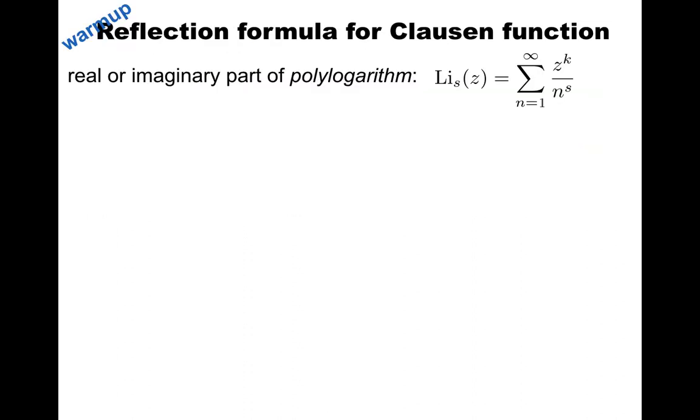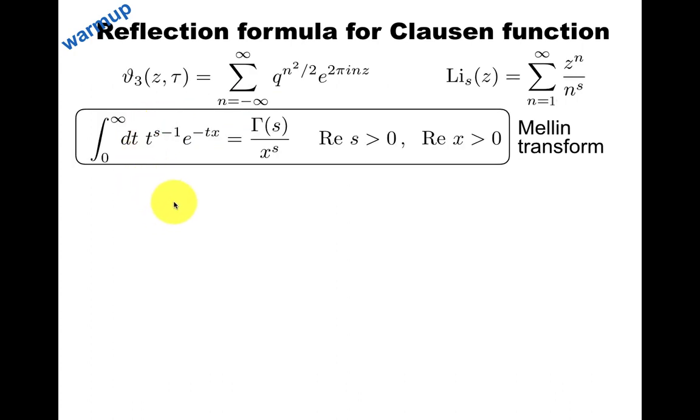So here we'd like to prove this reflection formula. As a warm-up, let's just do the reflection formula for the Clausen function, which is the real or imaginary part of the polylogarithm, which in itself is the generalization of the Riemann zeta function, to which it reduces if you set z equals 1. Let's take the original theta function, theta3, which is this sum representation, and following Riemann's original paper on the Riemann zeta function, let's use a Mellin transform.